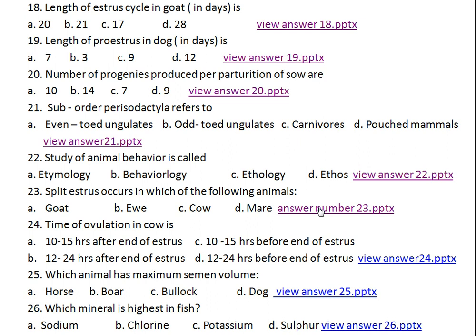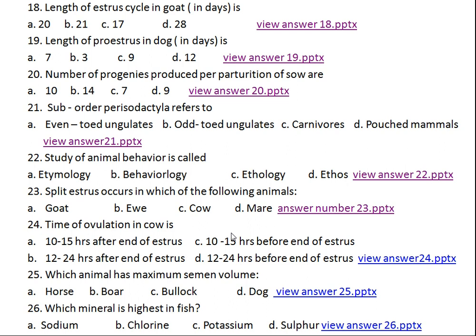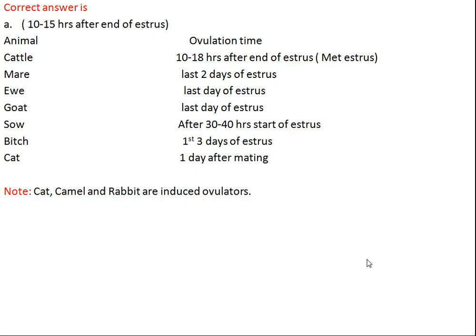Question number twenty-four: time of ovulation in cow is what? Option A: 10–15 hours after end of estrus, Option B: 12–24 hours after end of estrus, Option C: 10–15 hours before end of estrus, Option D: 12–24 hours before end of estrus. The right answer is Option A, 10–15 hours after end of estrus. In cattle, actual ovulation occurs during metestrus, that is 10–18 hours after end of estrus. In mare it is during the last 2 days of estrus. In ewe and goat it is the last part of estrus. In sow it is 30–40 hours from start of estrus. In bitch it is the first 3 days of estrus. In cat, camel, and rabbit, which are induced ovulators, ovulation occurs only after mating.